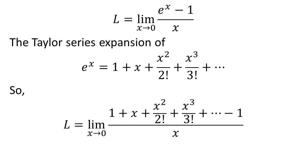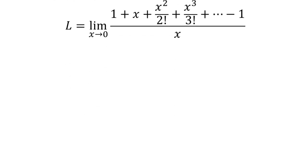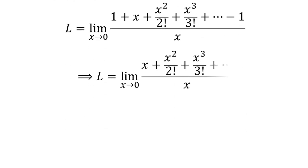So, the limit L equals the Taylor series expansion of e^x minus 1 over x as x approaches 0. Further simplification gives us L equals the limit of x plus x^2/2! plus x^3/3! and so on, all over x as x approaches 0.